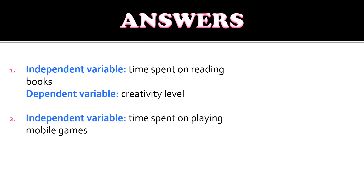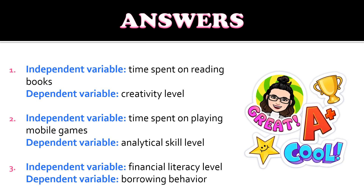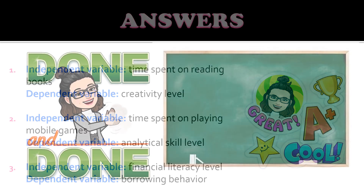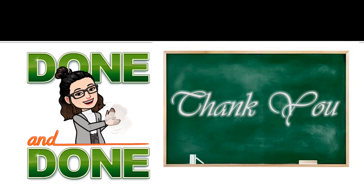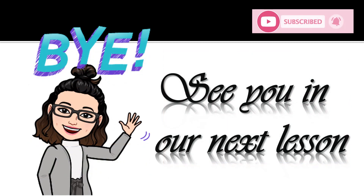For number two, the independent variable is the time spent on playing mobile games and the dependent variable is the analytical skill level. For number three, the independent variable is the financial literacy level and the dependent variable is the borrowing behavior of teachers. I hope you got all the correct answers, and that is all for today's topic. We're done for today — thank you very much. I hope you learned a lot and see you in our next lesson, bye!